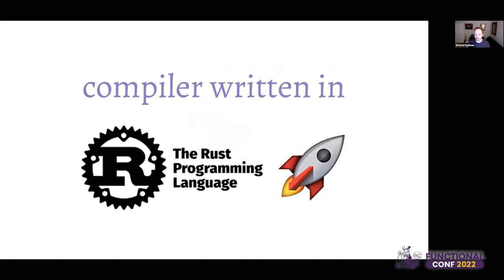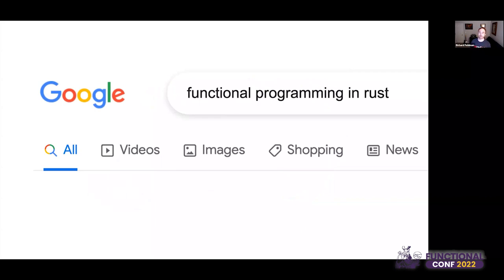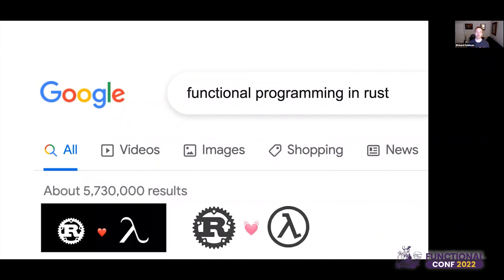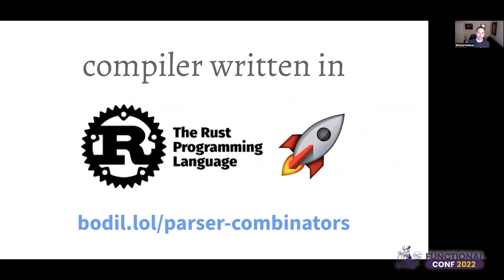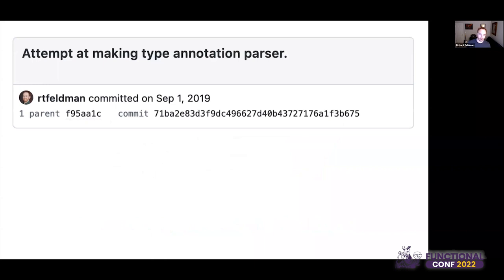We want to go fast. Rust is a systems-level programming language that gives you a ton of control. It's not really known as a functional programming language — it's imperative at its core — but there are tons of articles, blog posts, videos, and even a book on how to do functional programming in Rust. Because I was writing this compiler in Rust for the first time on a serious project, and I was much more familiar with functional programming, having done it for about 10 years, I decided to write the parser using parser combinators.